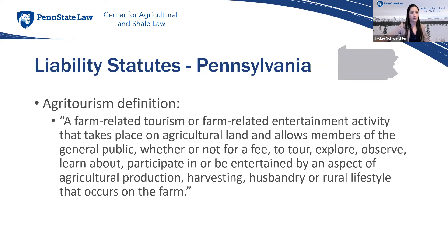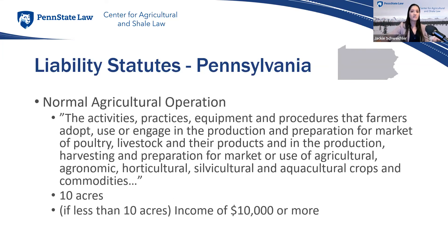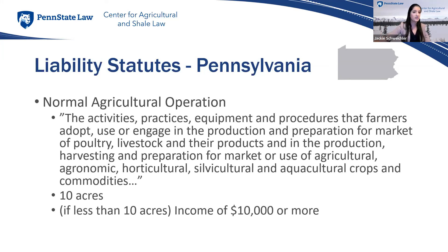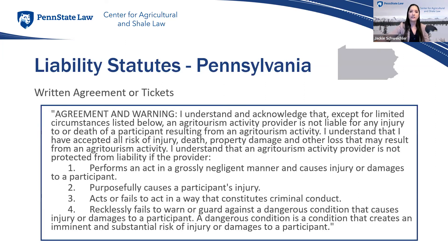Element one: the injury must occur while the visitor is participating in an activity meeting the definition of agritourism under the law — a broad definition that should cover most things remotely considered agritourism, minus the stated exceptions. Element two: the agritourism activity must occur on land used for normal agricultural operations as defined by Pennsylvania's Right to Farm Law — generally an activity used by a farmer for production of poultry, livestock, and crops. This also requires the farm to encompass at least 10 acres, or if less than 10 acres, generate annual income of $10,000 or more.